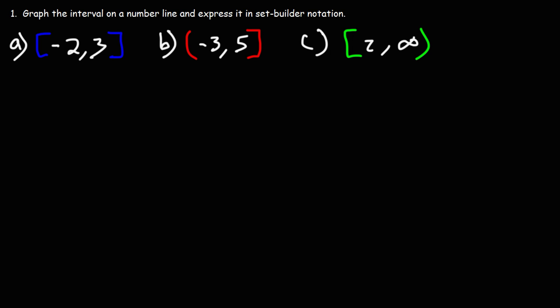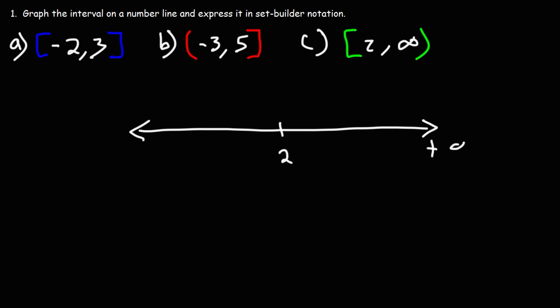Let's move on to part C. If you want to pause the video and try part C, go ahead. So let's start with the number line. We're going to start at 2 and this is going to go to positive infinity, which is all the way to the right. Negative infinity is all the way to the left. We have a bracket at 2, so I'm going to put a closed circle, and it goes to infinity so there's no stopping point — we're just going to have an arrow here.